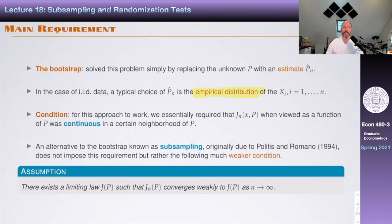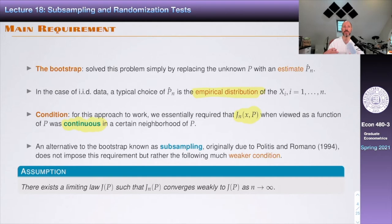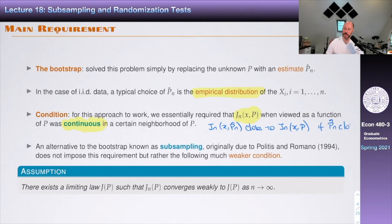The bootstrap had a condition: it required that J_n(x,P), viewed as a function of P, was continuous — at least locally. The idea was that if P-hat is close to P, we want J_n(x,P-hat) to be close to J_n(x,P). This is the notion of continuity needed. An alternative to the bootstrap, known as subsampling, was originally due to Politis and Romano, and does not impose this continuity requirement.